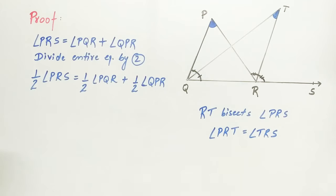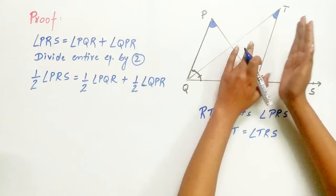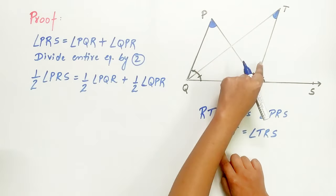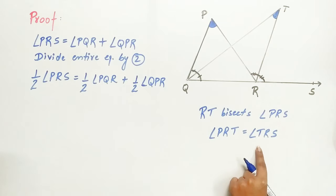We already know a bisector of an angle divides the angle into two equal parts. Hence, angle PRT equals angle TRS.